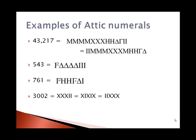So here, on the second example, I have two iotas, three mu's, three chi's, another mu, two eta's, a gamma, and a delta. All of that still adds up to the 43,217.